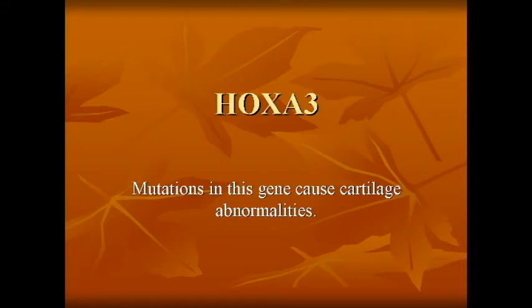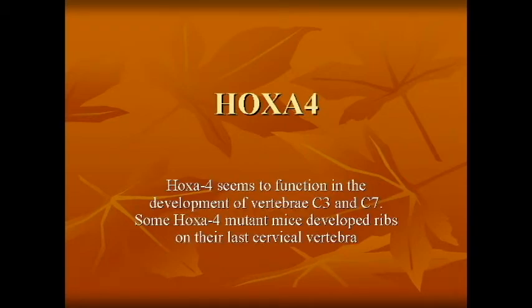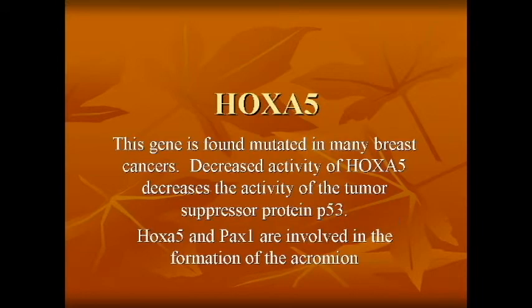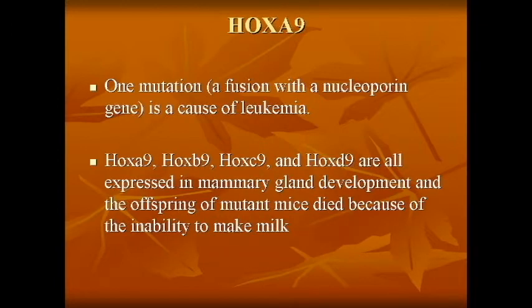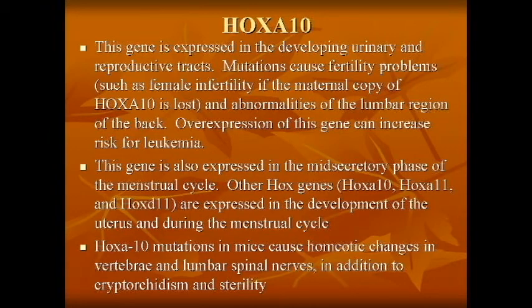It seems that there were two rounds of genome duplication which produced this. These are very important in giving various regions of the body identity. They are used for identity along limbs, along the nervous system, along the digestive tract. Mutants, especially mutant mice where these mutations are often studied, can be lacking in specific structures such as individual vertebrae.